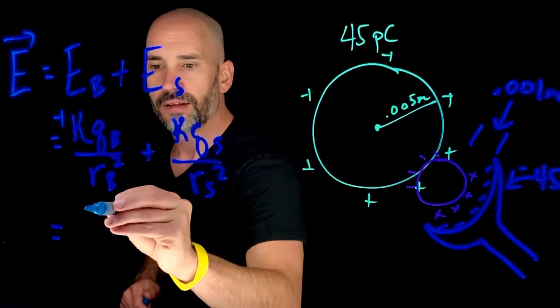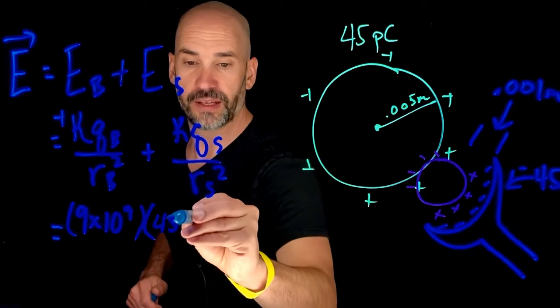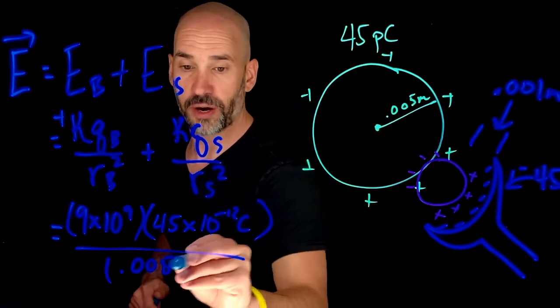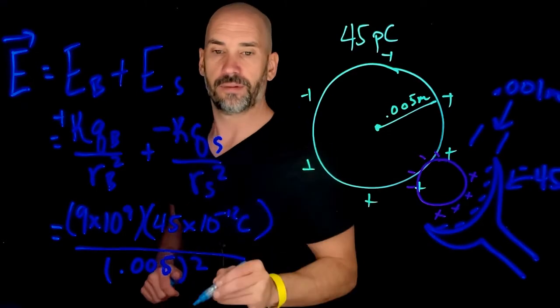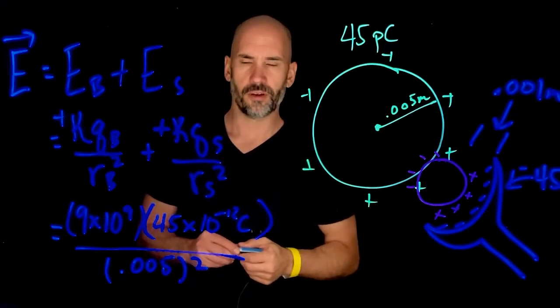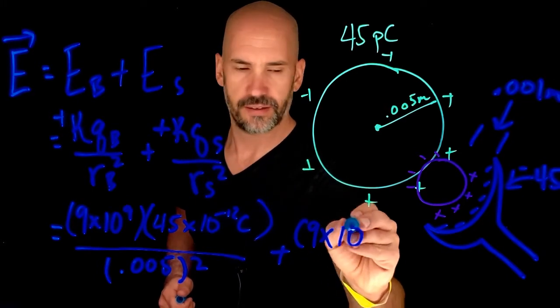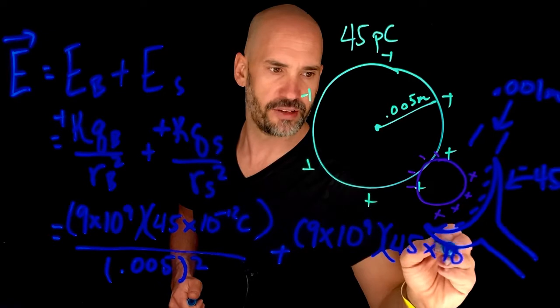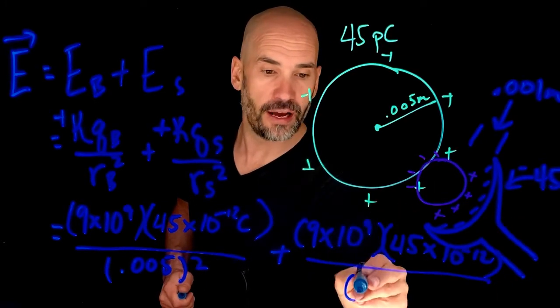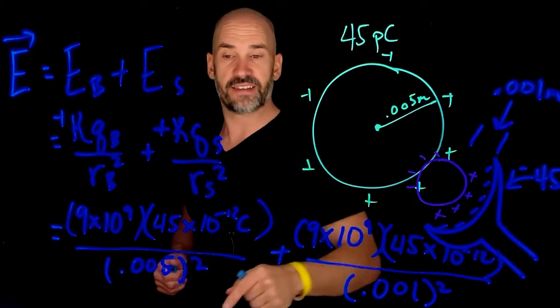So what is the net electric field that's going to be there? Well, it is going to be 9 times 10 to the 9, right? That's our K times Q of B, which is 45 times 10 to the minus 12 Coulombs all over that distance of 0.005 squared. Okay. And so this is positive. Still in the same direction. Okay. So now we are going to add these together. This is going to be 9 times 10 to the 9 times again, 45 times 10 to the minus 12. Notice I did not put the negative 45 Coulombs because I already decided that the direction is in this direction. And then on top of that, we have 0.001 squared. This is a little bit closer. That is that distance.